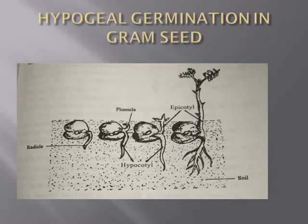For hypogeal germination, we take the example of gram seeds. In this case the epicotyl elongates and pushes the plumule upwards, which will later give rise to new leaves. The cotyledons do not come up — they remain in the soil or on the surface and later dry out and fall off.